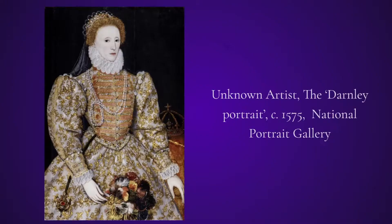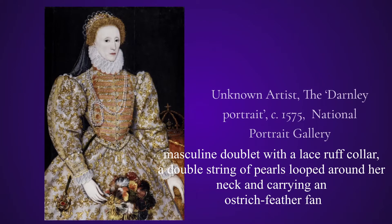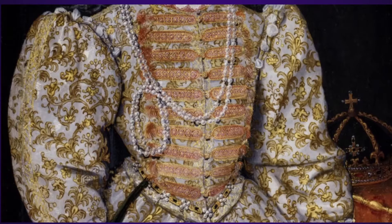Here is a portrait called the Darnley Portrait. The National Portrait Gallery describes it as showing Elizabeth looking cold, haughty, and imperious, wearing a rather masculine doublet with a lace ruff collar, a double string of pearls looped around her neck, and carrying an ostrich feather fan. Behind her on a table lies her crown. It was an image that was much reproduced, and it is rather more lifelike than some of her later portraits, which created the idea of an ageless virgin queen. Technical analysis has shown that the colors in this painting have faded over time — Elizabeth's now extremely pale complexion would have been much rosier, and the golden brown pattern on her dress would originally have been crimson and gold.